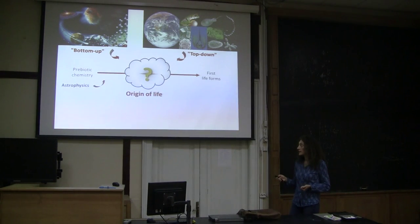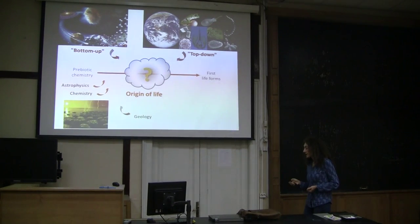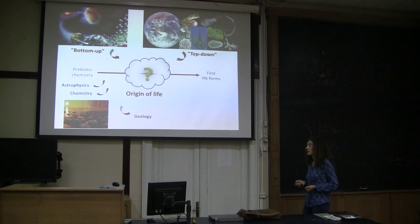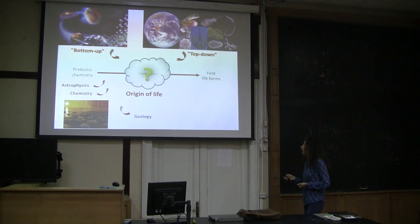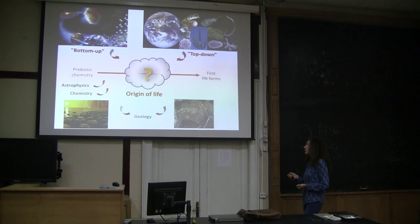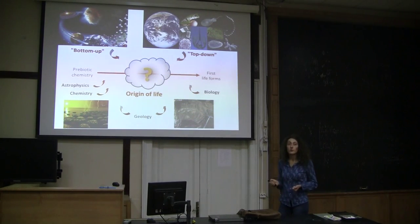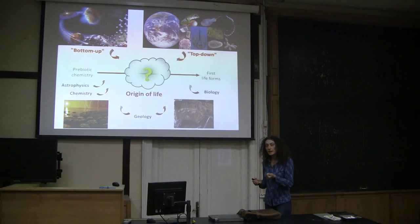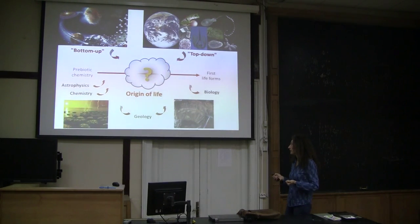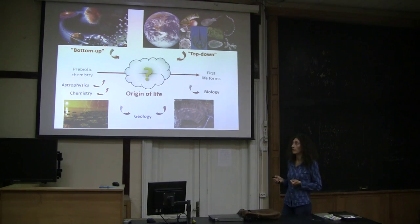This comes from different disciplines. For the bottom-up approach there's the contribution of astrophysics, chemistry, and geology. Geology tries to define the conditions of the primitive Earth that could have favored the emergence of life. For the top-down approach, geology can contribute by studying the oldest fossils left by life. And then biology can contribute essentially by distilling the important essential properties of contemporary organisms that should have been there since the beginning.